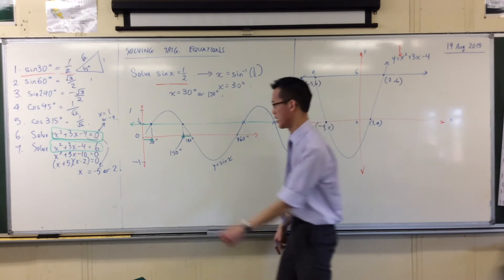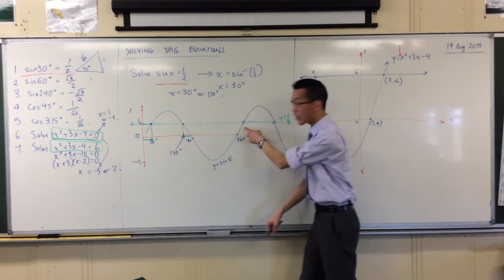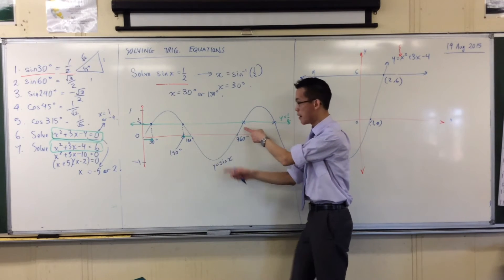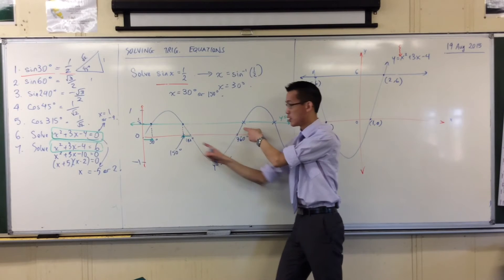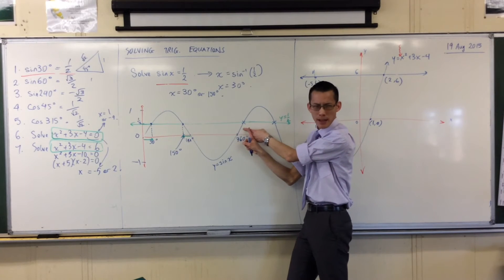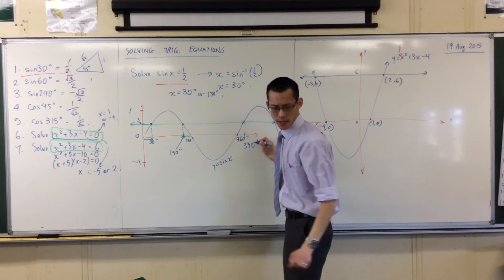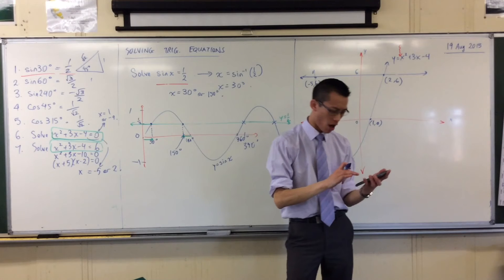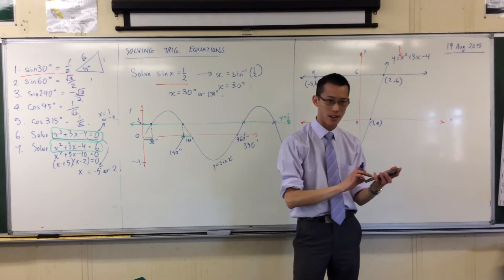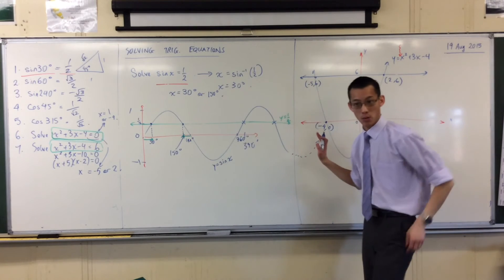There is a predictability to it. We worked out this second angle from this one. I could work out the third one as well. Remember, it's repeating every 360 degrees. So if that's 30, and I go forward 360 degrees, where would you expect to end up? 390. Sine 390. Sure enough. And I could keep going if I wanted to.